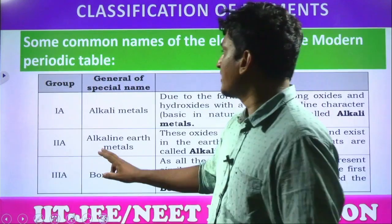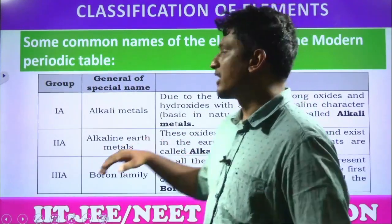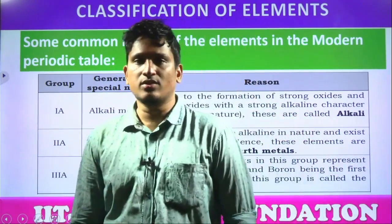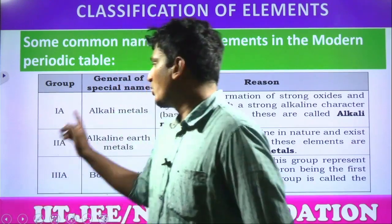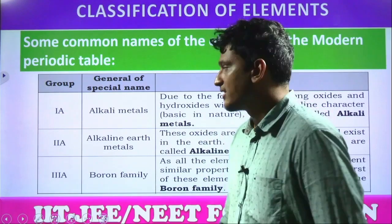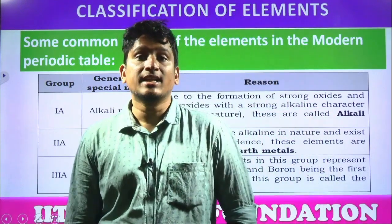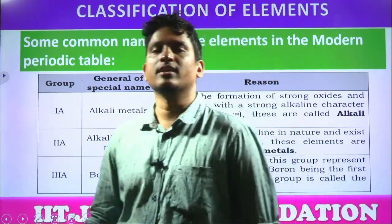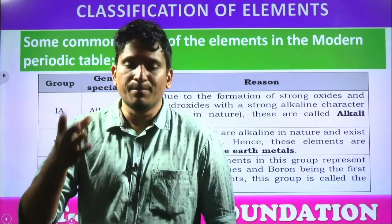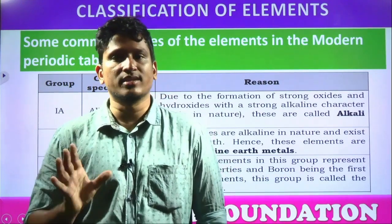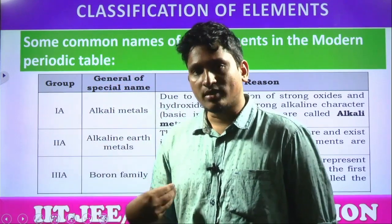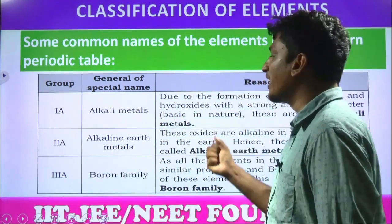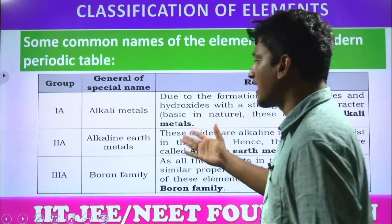Next, some common names of elements in the periodic table. There are 18 groups, and every group has a speciality of reactivity, so a group name is given. Group 1 elements are called alkali metals. Group 2 elements are called alkaline earth metals. Why are they called alkali? Alkali means basic nature — when a base dissolves in water it is called an alkali. Both these group elements are basic in nature — they form very strong basic oxides. That is why they are called alkali metals and alkaline earth metals.